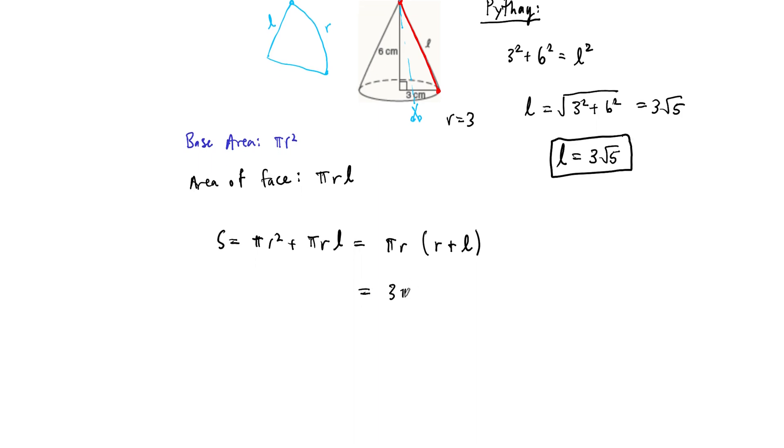So this becomes 3 pi times 3 plus 3 root 5. And again, we can factor out another 3 if we want. And this can be written as 9 pi times 1 plus root 5. And this is in centimeters squared. So there's the surface area. There's the surface area of the cone whose base radius is 3 and height is 6 centimeters.